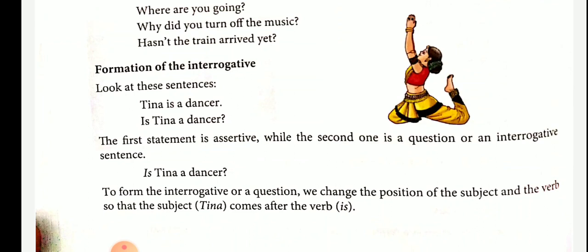The formation of an interrogative sentence. Look at the sentence: Tina is a dancer. The question form is: Is Tina a dancer? The first statement is assertive, while the second one is a question or an interrogative sentence. To form the interrogative sentence, we change the position of the subject and the verb so that the subject, Tina, comes after the verb.